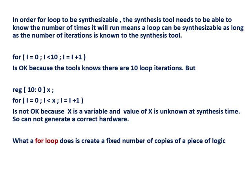For the for loop to be synthesizable, the number of loops should be known to the synthesis tool during compile time. A loop can be synthesizable as long as the number of iterations is known to the synthesis tool. If the synthesis tool knows how many times the loop will run during compile time, then it will be able to generate hardware — and synthesizable means the code has respective hardware. If there is no hardware for a piece of Verilog code, then it is not synthesizable.